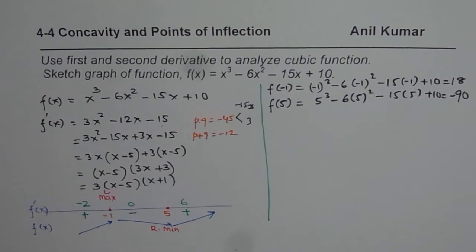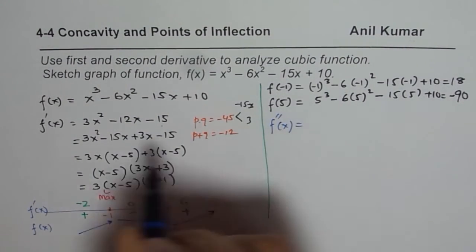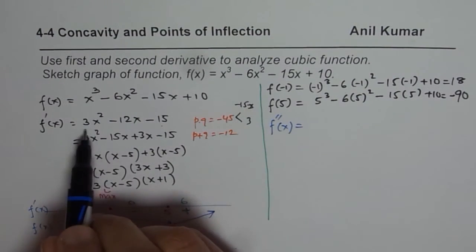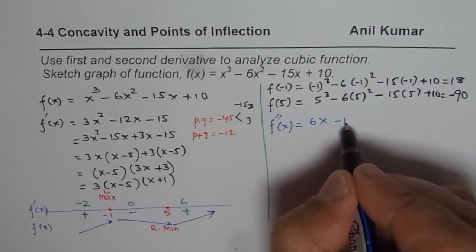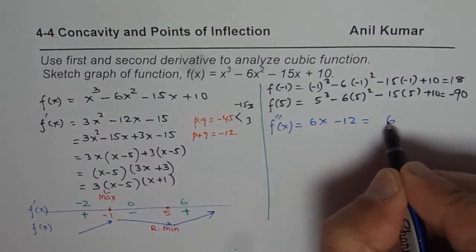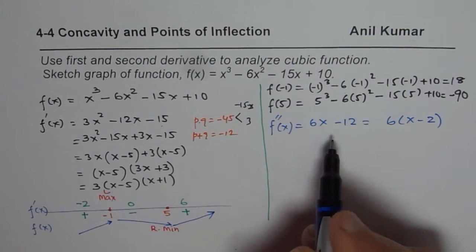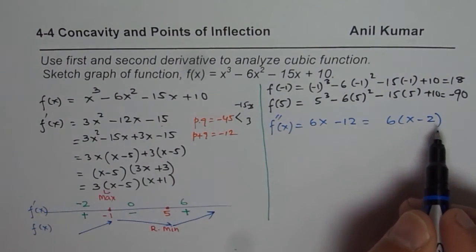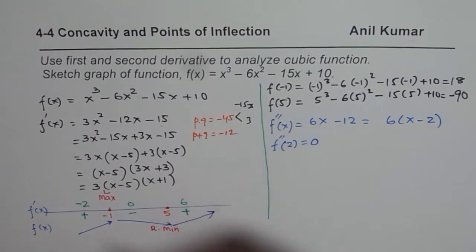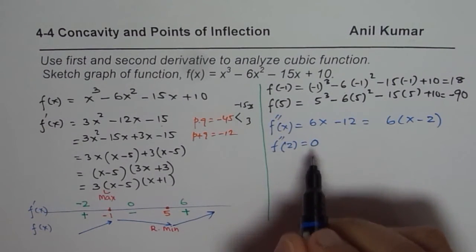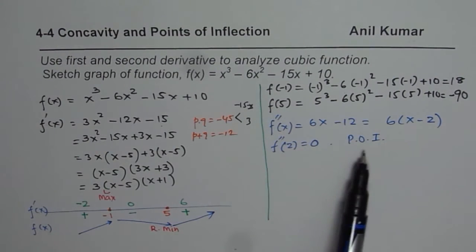We could also find maximum and minimum from concavity — that is what we have learned in this chapter. So let us find the second derivative. The second derivative is 6x − 12, and factoring gives 6(x − 2). Setting it to zero gives x = 2, so f''(2) = 0. At that point, we could have a point of inflection.